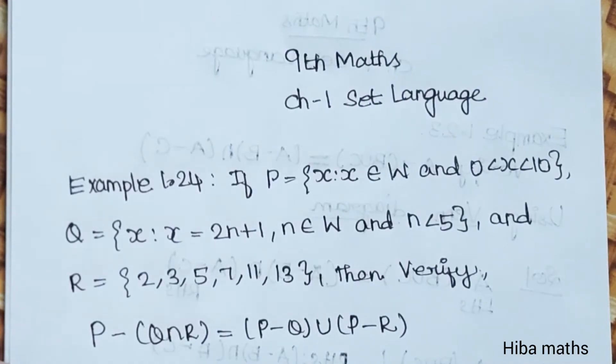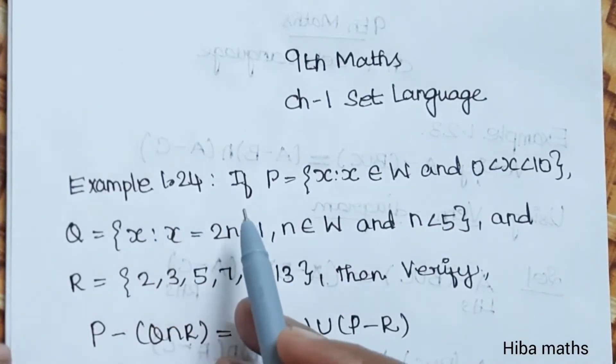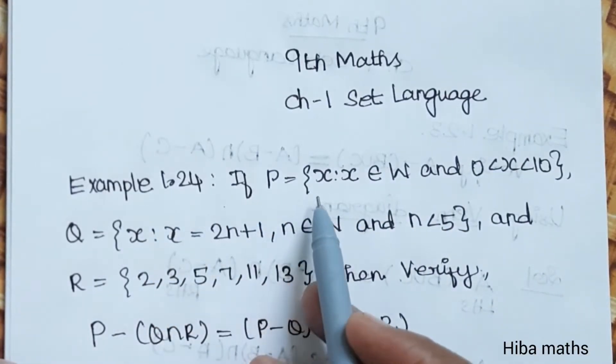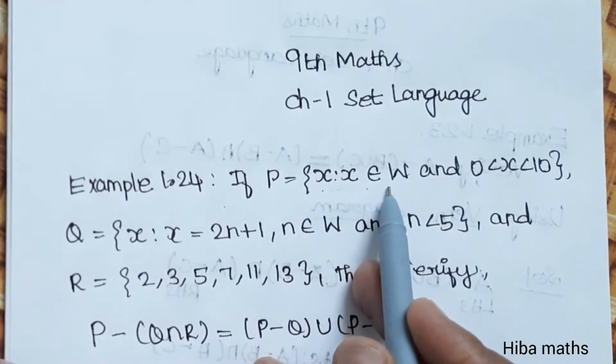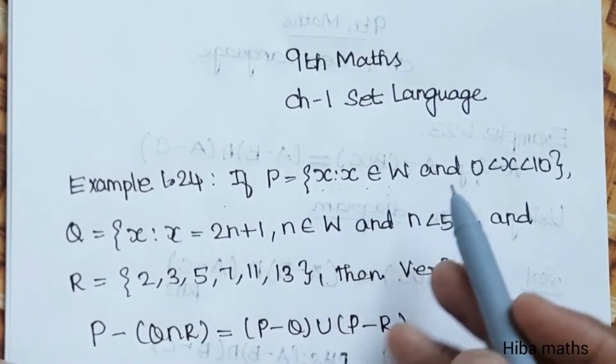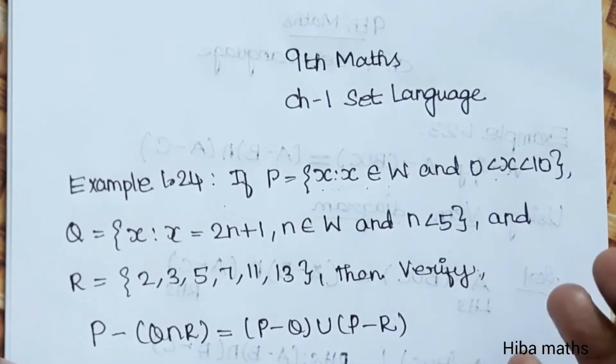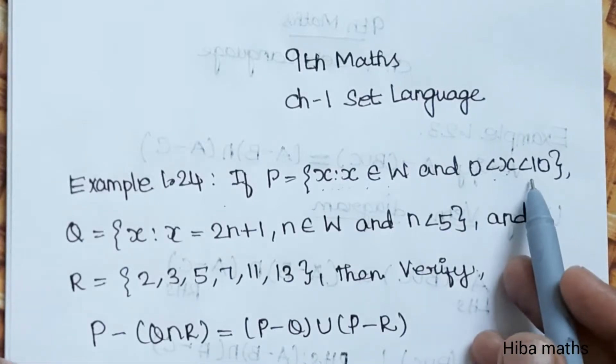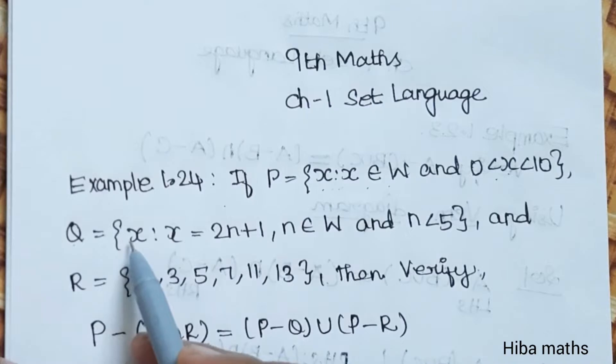Hello students, welcome to Hiba Maths, 9th standard maths, chapter 1, set language, example 1.24. If P is equal to x such that x is an element of W, W is a whole number, and x is greater than 0 and less than 10.